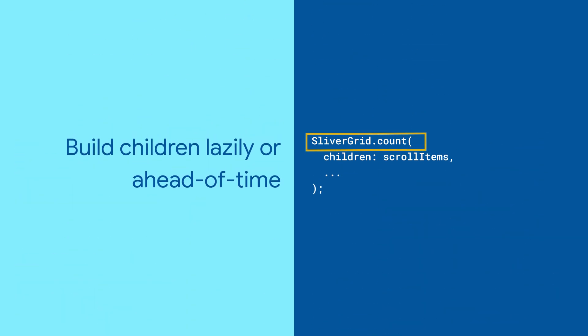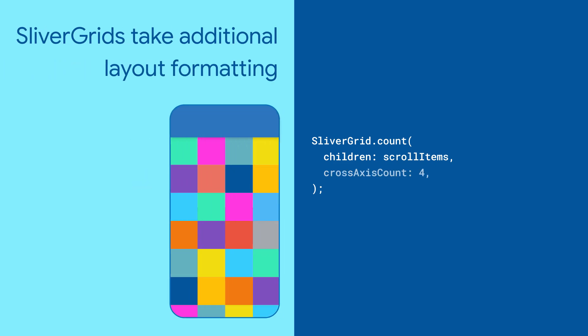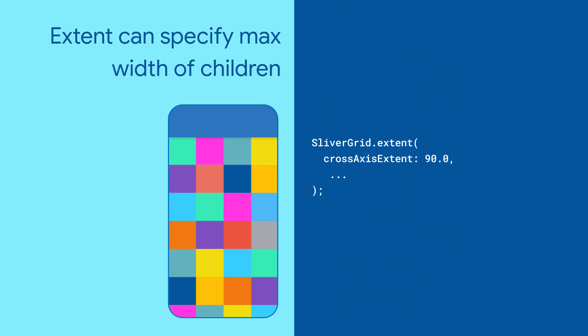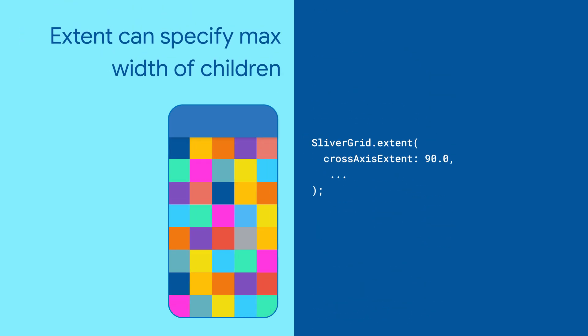SliverGrids also can specify children with a delegate or an explicit list, but there's some additional formatting for the cross-axis dimension on a grid. Use the count constructor to specify how many items across the grid it should contain, or specify the maximum width of items to determine how many should fit across a grid with the extent constructor.